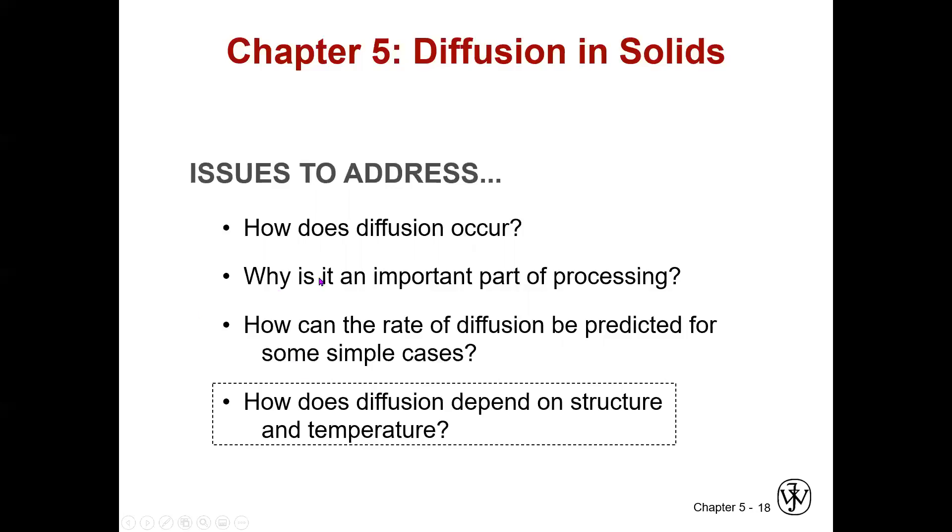So far we have talked about the mechanism of diffusion, this is vacancy or interstitial. We've talked about why it's important, an example of case hardening.